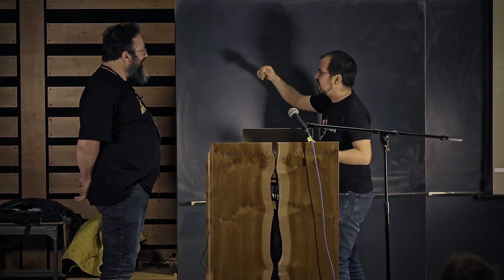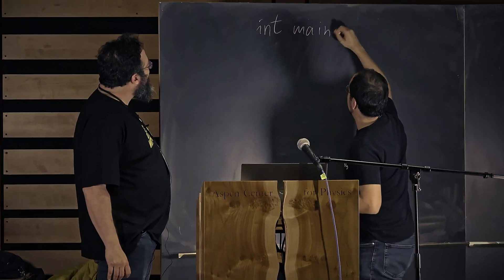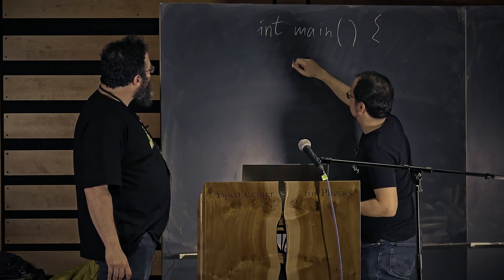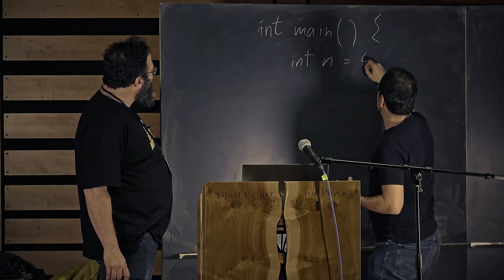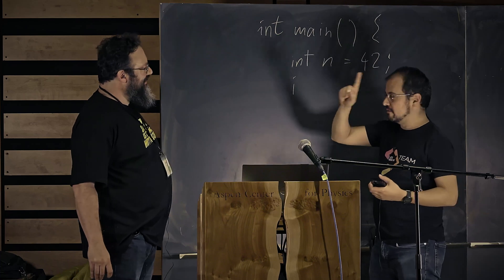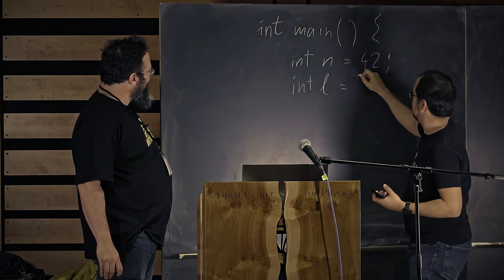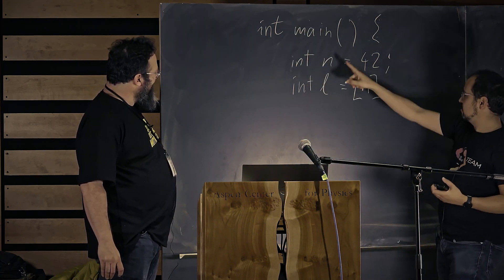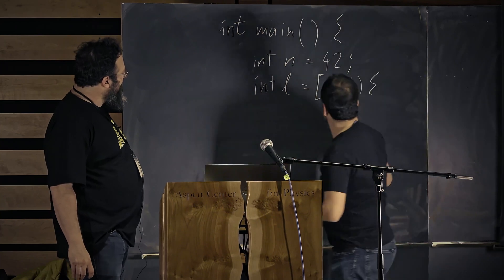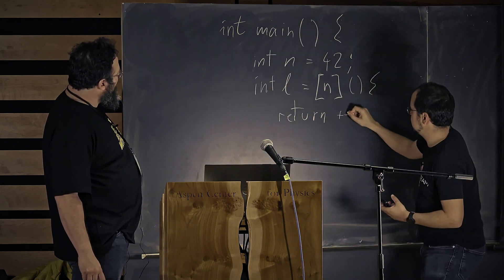So yeah, I'm just going to start writing some code. We have, I hope you can see this. You have an int main. And then we have a local variable here, int n equals 42. And then we're going to do a lambda. So we're going to do an immediately invoked lambda expression. We're going to capture this n by value. And then what we're going to do is we're going to modify this n. We're going to say return plus plus n.